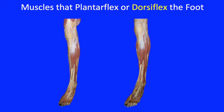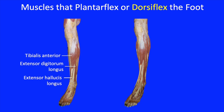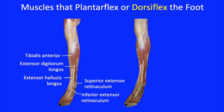The muscles that dorsiflex the foot are found in the anterior compartment. From lateral to medial, they are the extensor digitorum longus, the extensor hallucis longus, and the tibialis anterior. Recalling the upper limb, the mechanical advantage of the flexors was enhanced by running tendons deep to a flexor retinaculum, similar to a pulley. In the foot, there are two retinacula — the superior and inferior extensor retinacula — to help these powerful dorsiflexors.